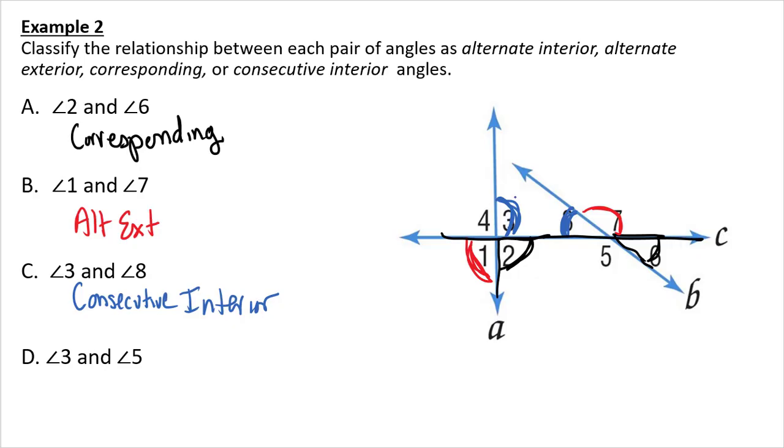And then lastly, we have angle three and angle five. Well, those are alternate interior, alternating sides of my transversal, but in between the two lines.